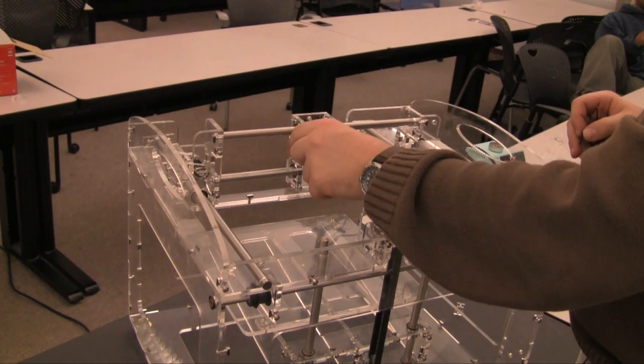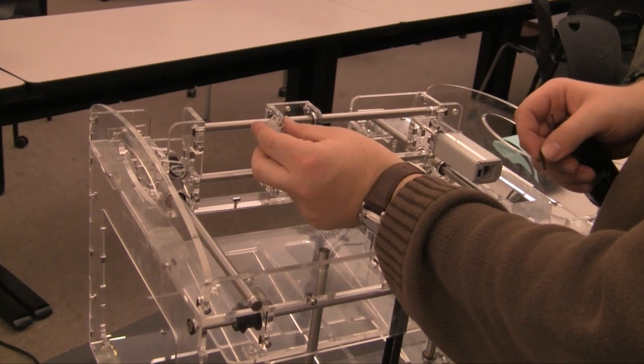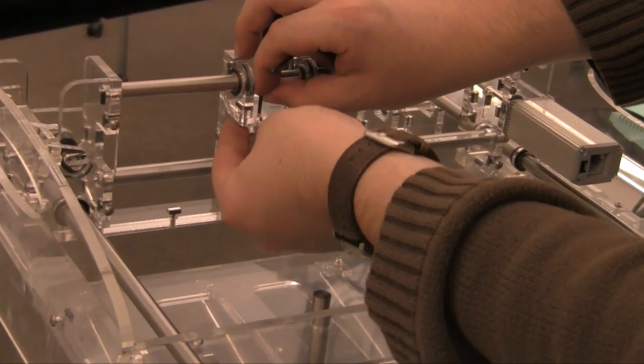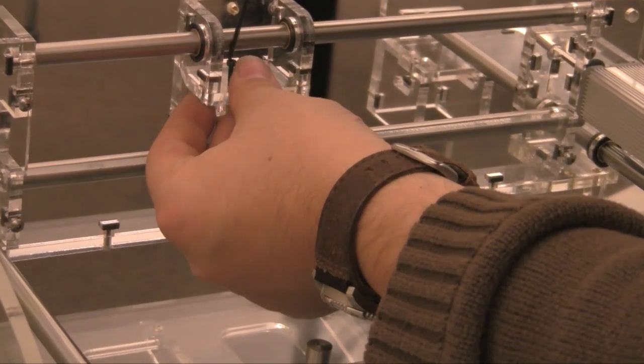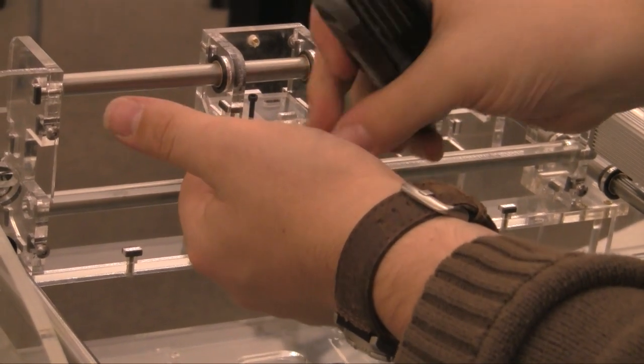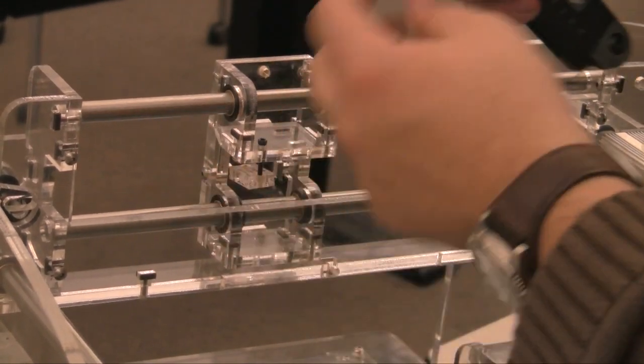Now we will prepare the Y axis belt. Take a belt clamp with threaded inserts and place it below this part of the carriage. Give it a few twists on the screw to secure it.